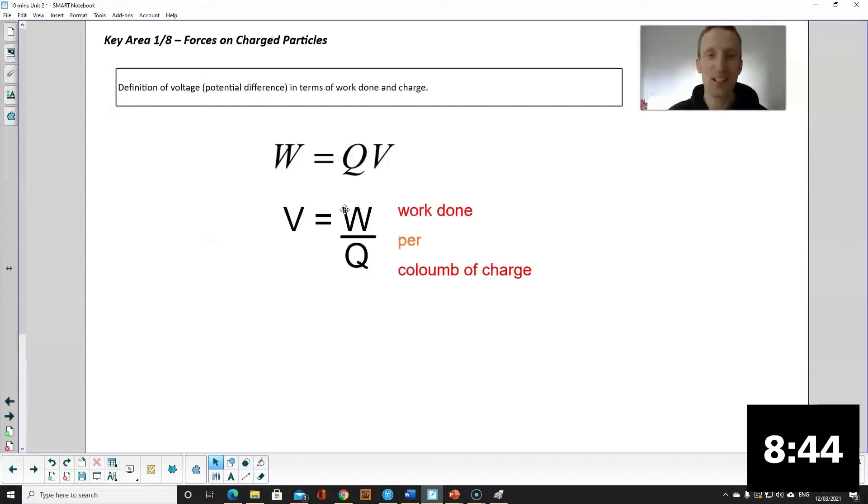If you rearrange it you get that voltage is the work done divided by the charge. So our definition is work done per coulomb of charge. Just like we define other things we'd look at what's on top per whatever's on bottom.